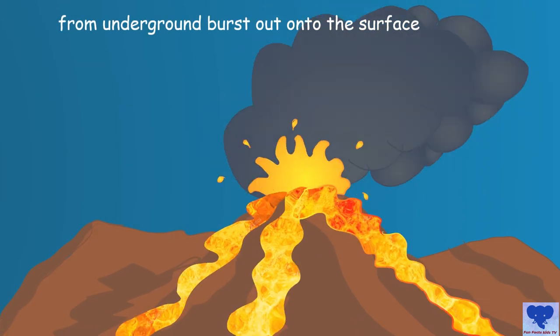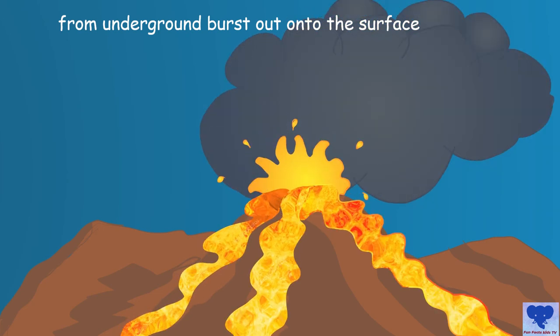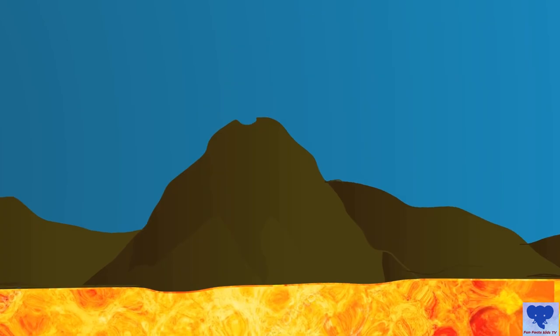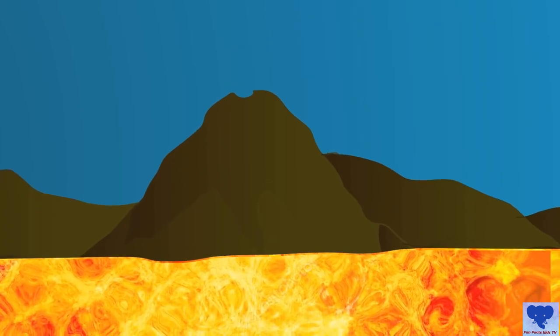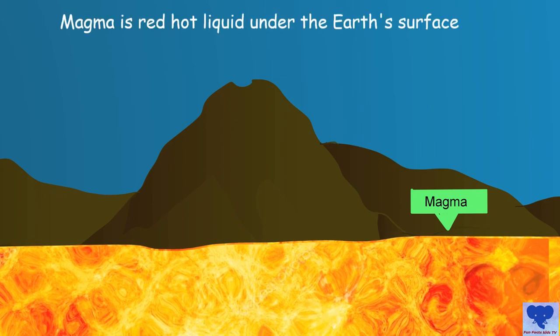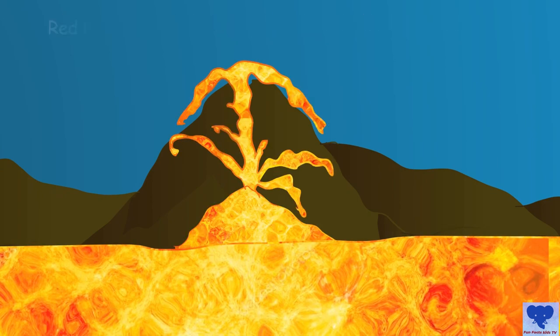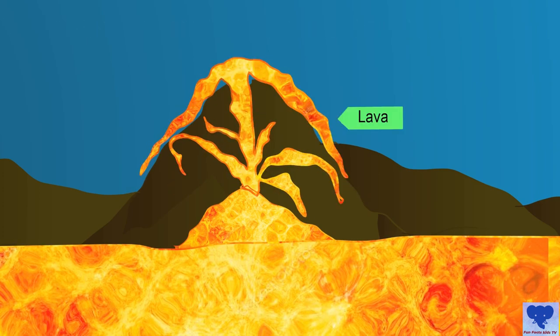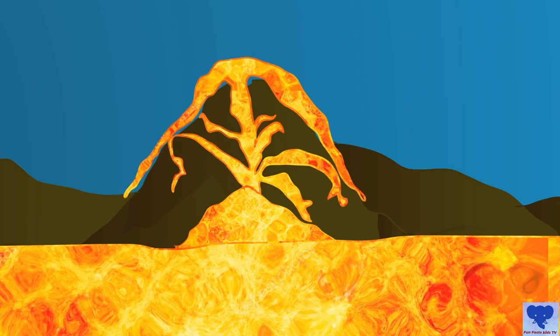When the red liquid rock is under the earth's surface, it's called magma. When it oozes out, it's called lava. Sometimes it oozes out slowly, but other times it just explodes with a rumble and a roar, giving out ash, gases, and streams of lava.